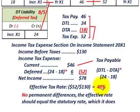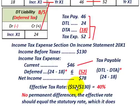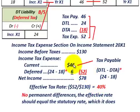The effective rate equaling the statutory rate proves our example is correct, confirming all deferred tax liability and deferred tax asset calculations were done properly. If the effective rate had differed from 40%, it would indicate errors in our income tax expense calculations.